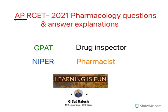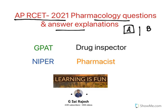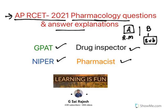Hello everyone, welcome to the video on APR SET 2021 pharmacology questions and answer explanation. APR SET will have two papers: Part A and Part B. Part A is a common paper for all subjects, known as research methodology, whereas Part B is the subject-specific paper. In today's video I will explain pharmacology questions from APR SET 2021, which are also important for competitive exams like GPAT, NIPER, Drug Inspector, and Pharmacist-related government examinations.